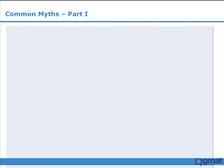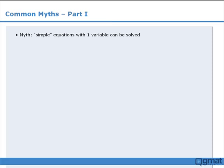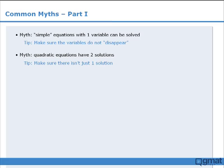So in this lesson, we examined two common myths. The first myth is that simple equations with one variable can be solved for x. This is not necessarily the case. Before you assume that a simple equation can be solved, you must make sure that this is not one of those equations where the variables disappear. The second myth is that all quadratic equations have two different solutions. This is not always true. So you must make sure that the equation doesn't have just one solution.